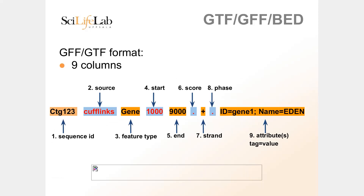GFF looks pretty much the same thing. It starts with the chromosome name, then has a column for the source — which program generated this feature — what kind of feature it is, starting position, ending position, score, strand, and so on. Over here you can have as many key-value pairs as you want, like 'ID=gene' and 'Name=ID', so you can squeeze in whatever additional information you need.